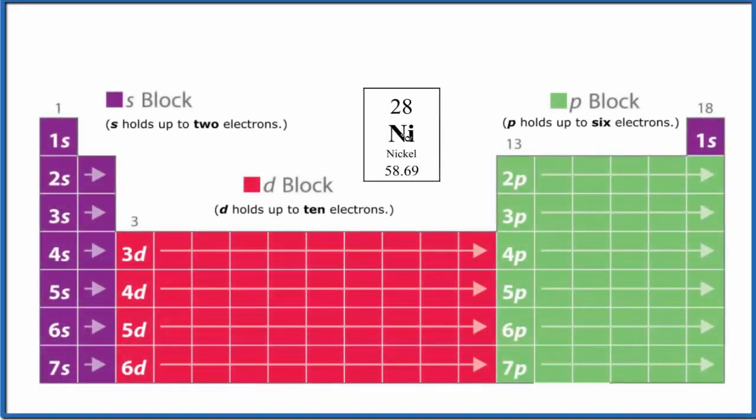Let's write the atomic orbital diagram for nickel. That's Ni. And the first thing we need to do when we do these atomic orbital diagrams, we do need an electron configuration for nickel. So let's do that.